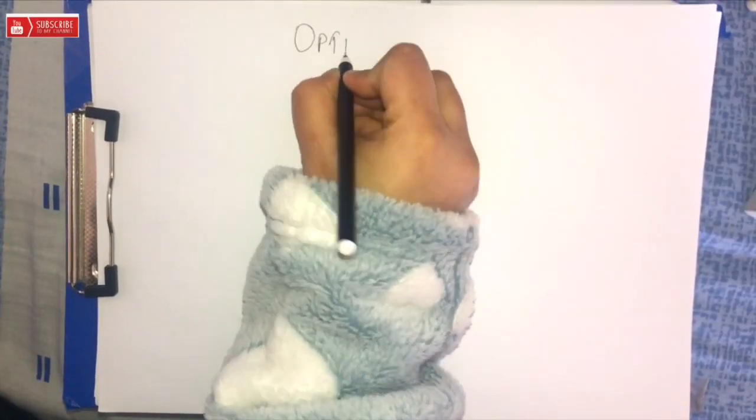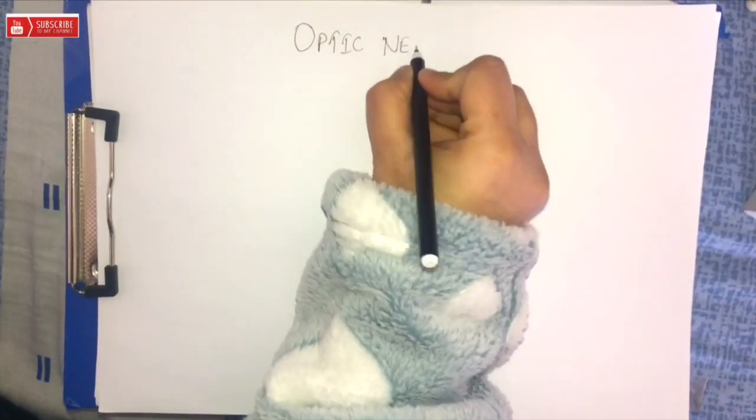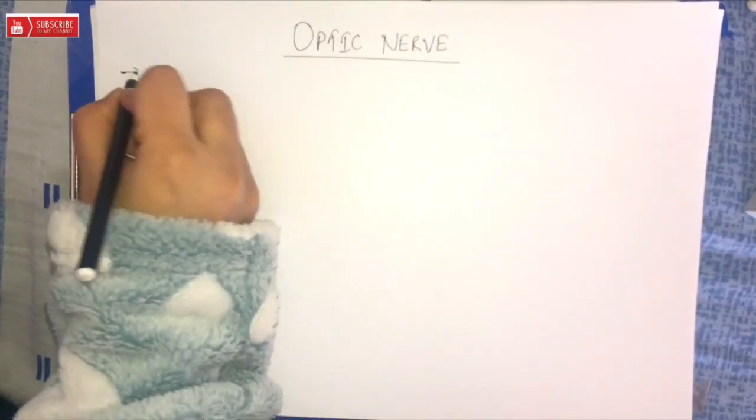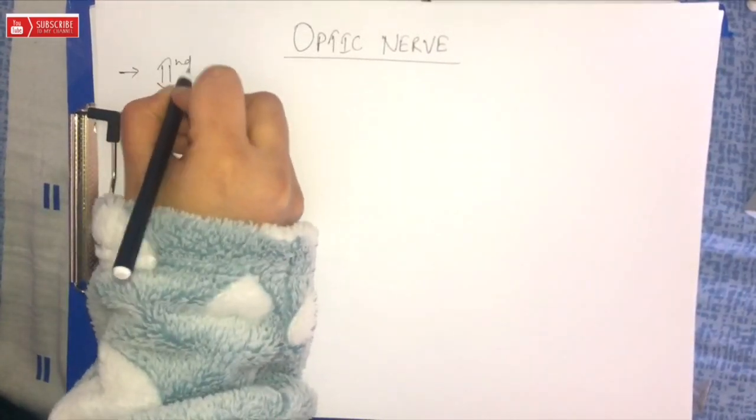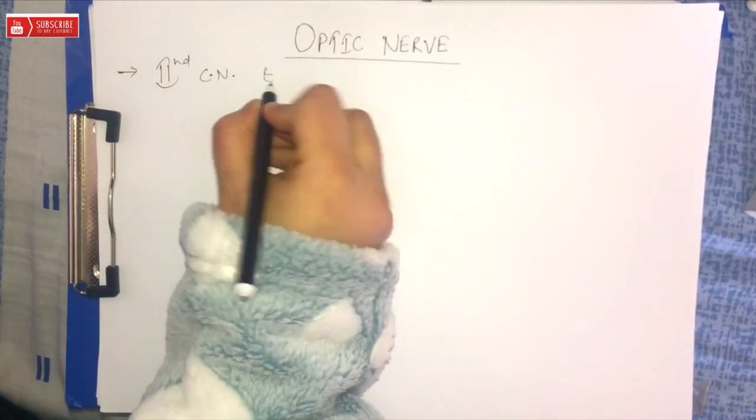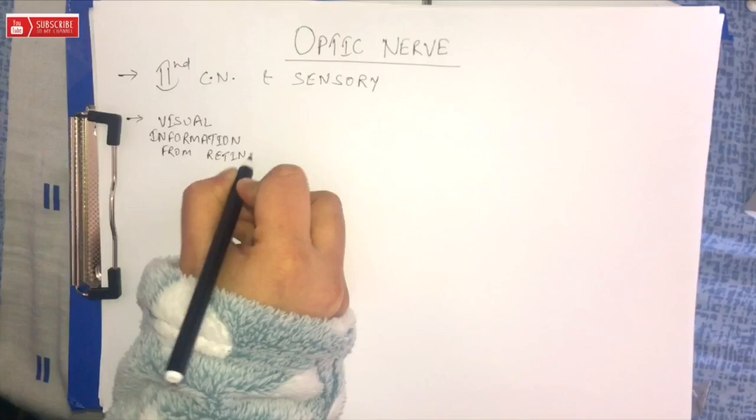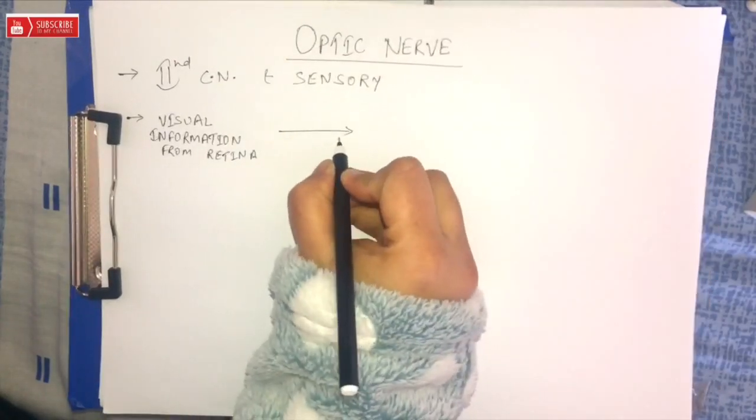Hello everyone, welcome to ADO Minds. My name is Shalini, and today in this video we will study about the optic nerve. The optic nerve is the second cranial nerve of sensory nature that transmits visual information from the retina to the brain.